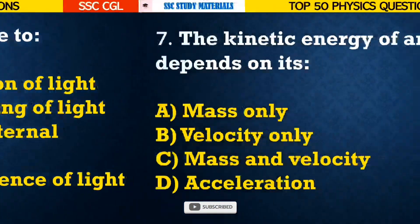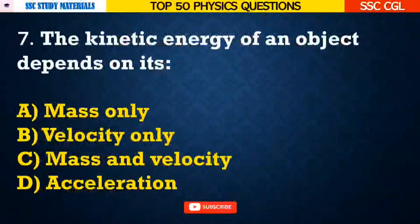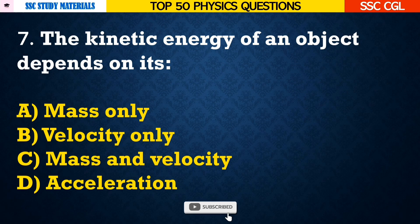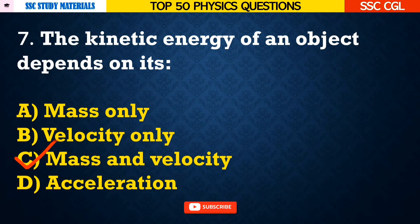Question number 7: The kinetic energy of an object depends on its — Answer C. Mass and velocity.